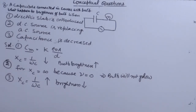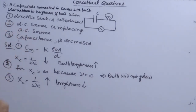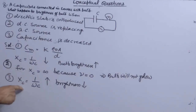These are some very important questions we have discussed. One more case: if AC source frequency is decreased, then XC increases, and brightness decreases.